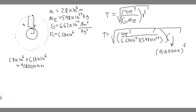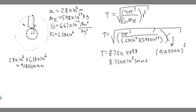When you compute this, you get approximately 8,750.44... seconds. Rounding, that gives us 8.750 times 10 to the 3 seconds. So the period of the orbit — your answer to Part A — is 8.750 times 10 to the 3 seconds.